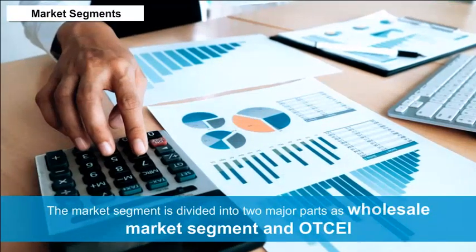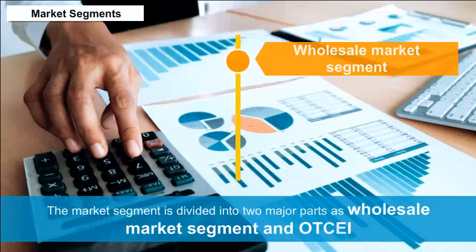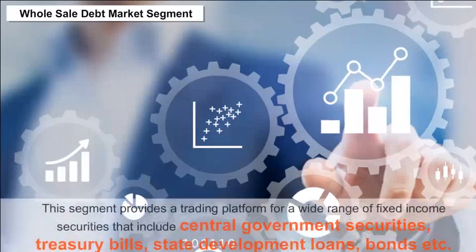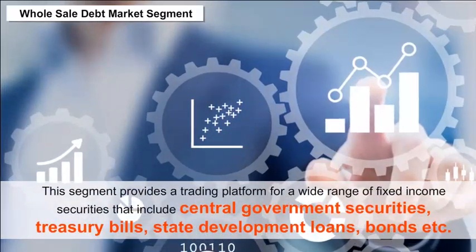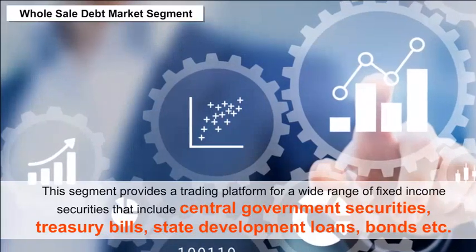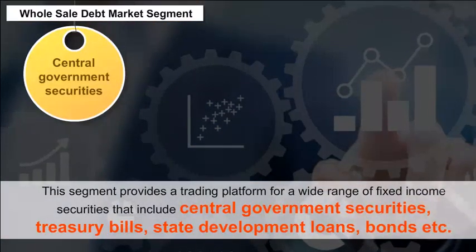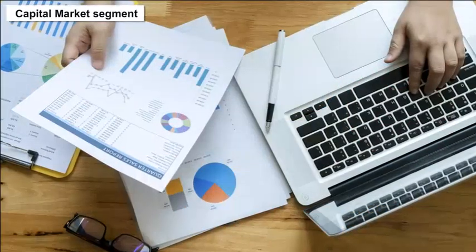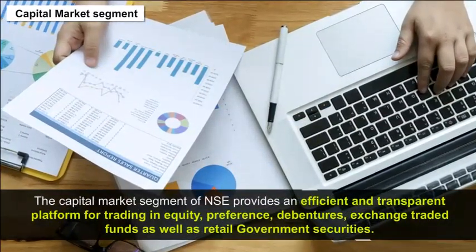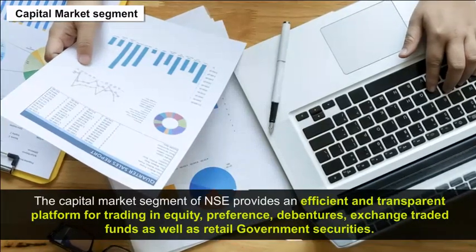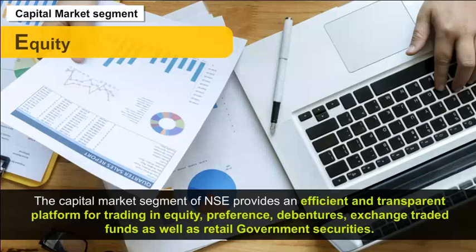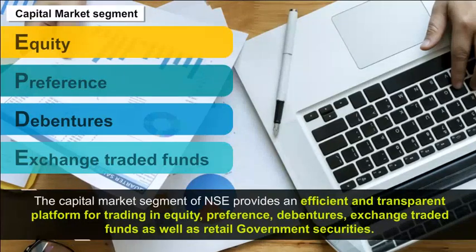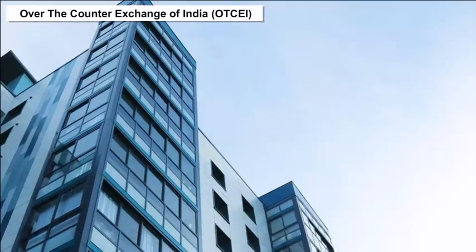Market segments of NSE are divided into two major parts: the Wholesale Debt Market Segment, which provides a trading platform for fixed-income securities including central government securities, treasury bills, state development loans, and bonds; and the Capital Market Segment, which provides an efficient and transparent platform for trading in equity, preference shares, debentures, exchange-traded funds, and retail government securities.